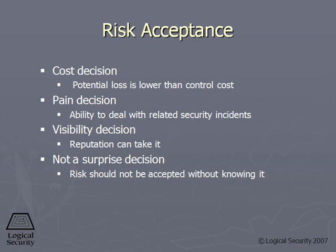When you accept risk, it needs to be based on cost — where we did the cost-benefit analysis with the control. Pain means that if we allow this risk to exist, how is it going to hurt us? How is it going to affect us? Reputation — if we just accept this risk and our customers find out about it, how is that going to affect our reputation? And it shouldn't be a surprise decision. You should have a very calculated process that you're going through. We're talking about building a whole security risk management program, and you're not just winging it.